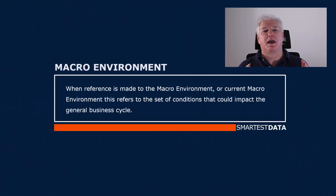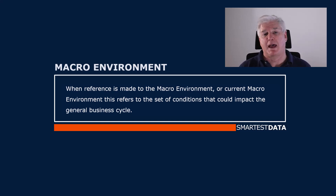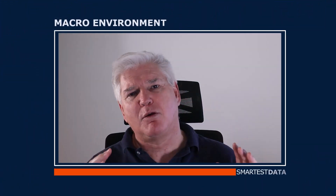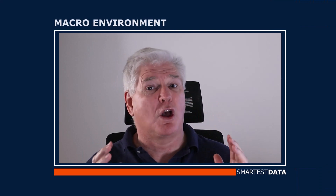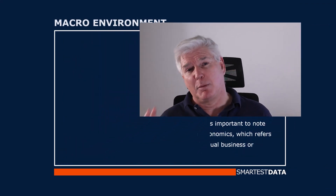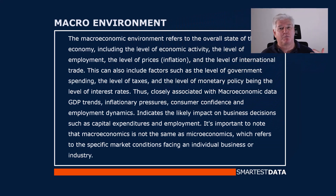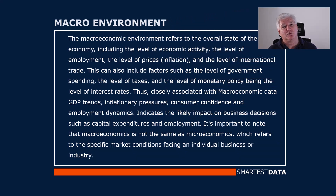When reference is made to the macro environment or current macro environment, this refers to the set of conditions that could impact the general business cycle. The macroeconomic environment refers to the overall state of the economy, including the level of economic activity, the level of employment, and the level of prices or inflation, and also the level of international trade.